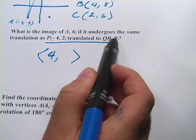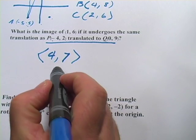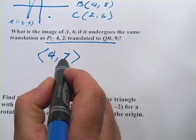So +4 for the x. And how about the y? It goes from 2 to 9. That's a change of +7. So there's my transformation, the translation.